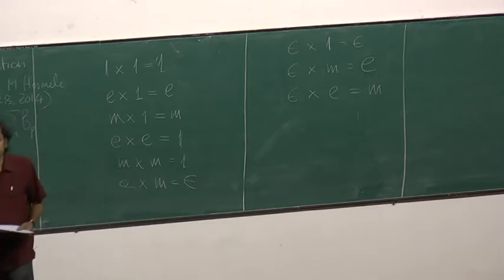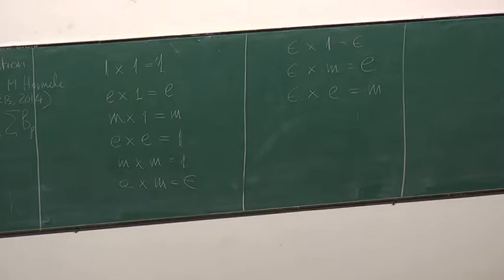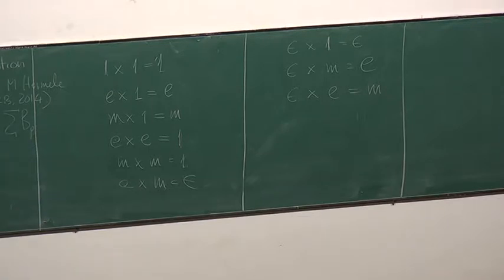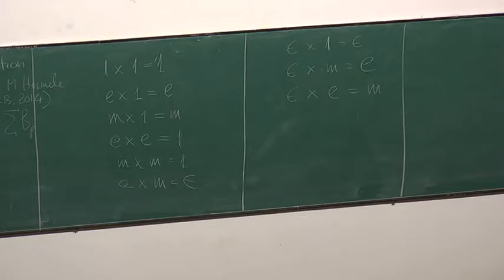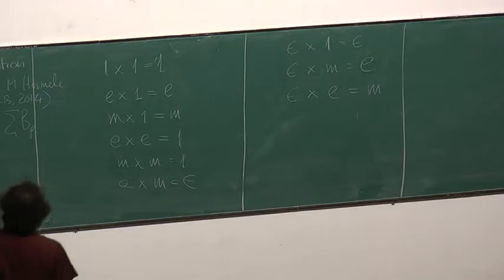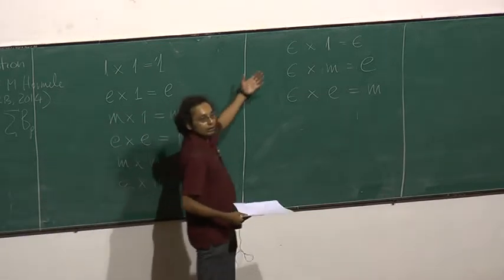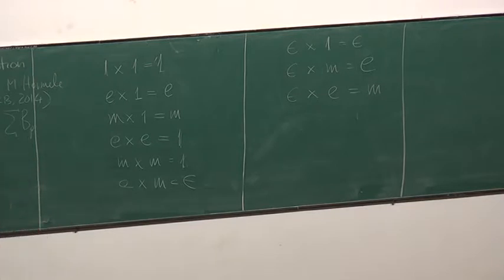This fusion rule table survives even if I add perturbations, as long as the phase is not destabilized. As long as I am in this phase, this table survives. Even though the dispersion of the electric and magnetic charges may be flat, extra terms like the magnetic field term I introduced earlier create some dispersion. But the fact that these fusion rules are obeyed — that remains. This is a slightly shorthand way of writing things.